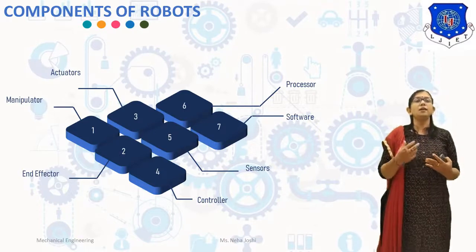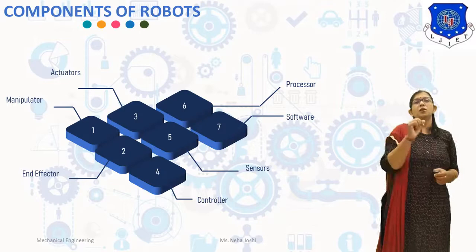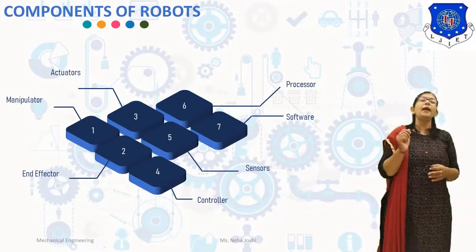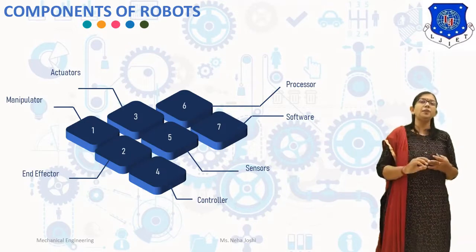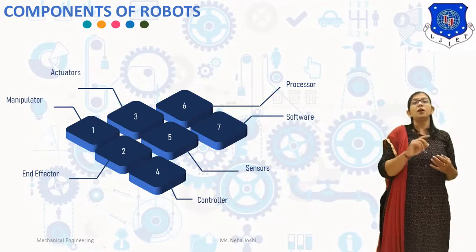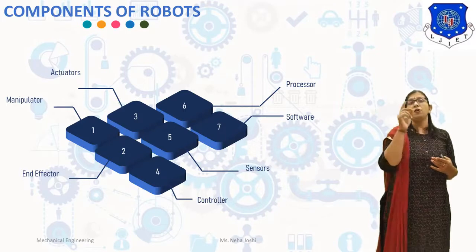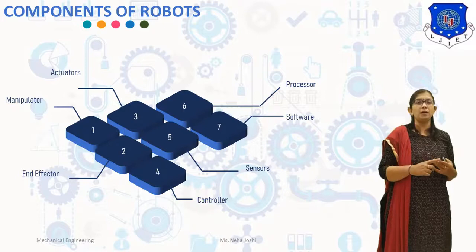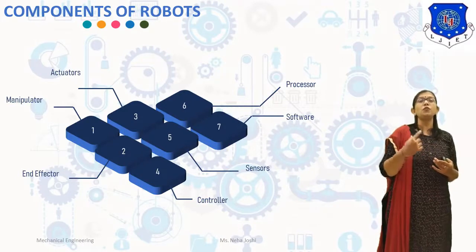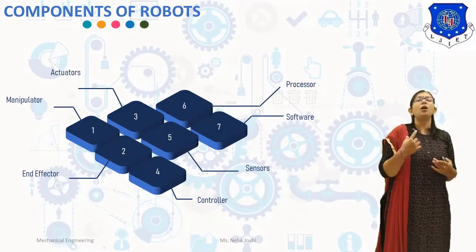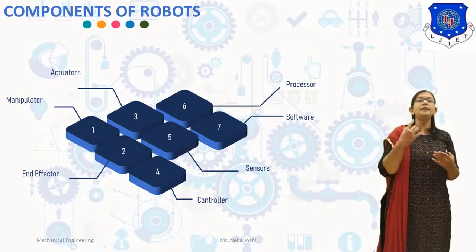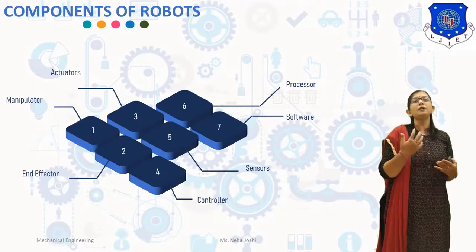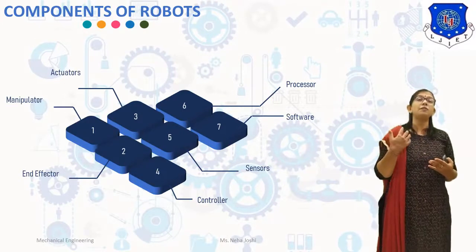The next component is the controller. The controller receives instructions from the processor of the computer and controls the motions of the actuators. It takes feedback from the sensors. The controller performs three functions: it stores the position and sequence state of the manipulator, it initiates and terminates the motion of individual components of the manipulator in a desired sequence at specified points, and it permits the robot to interface with the outside world via sensors.